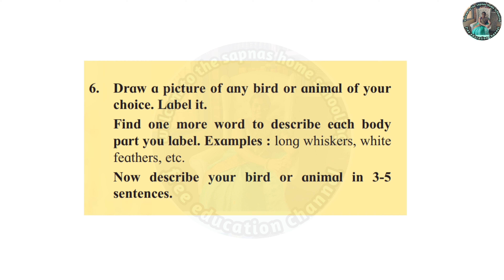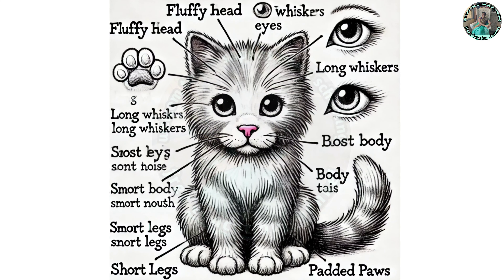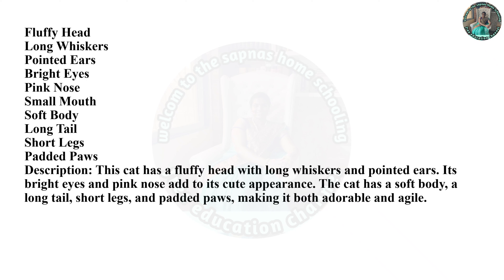Question 6: Draw a picture of any bird or animal of your choice and label it. Find one more word to describe each body part — for example: long whiskers, white feathers. Now describe your bird or animal in 3 to 5 sentences. Example — a cat: floppy head, long whiskers, pointed ears, bright eyes, pink nose, small mouth, soft body, long tail, short legs, padded paws. Description: This cat has a fluffy head with long whiskers and pointed ears. Its bright eyes and pink nose add to its cute appearance. The cat has a soft body, a long tail, short legs, and padded paws, making it both adorable and agile.